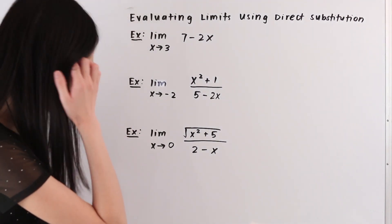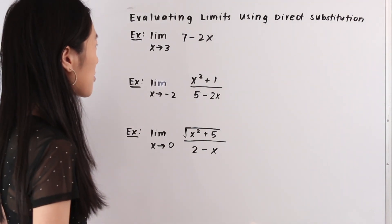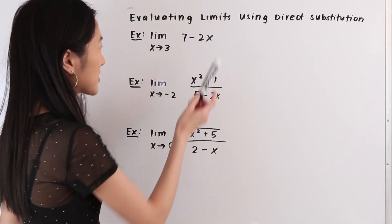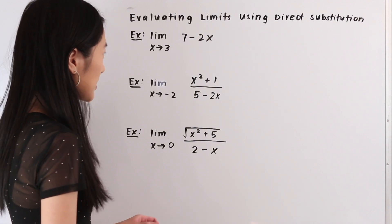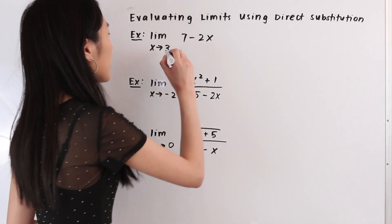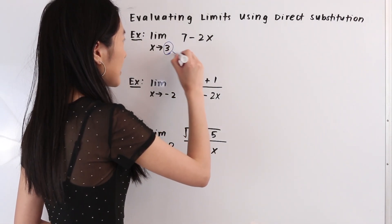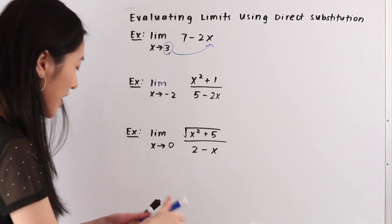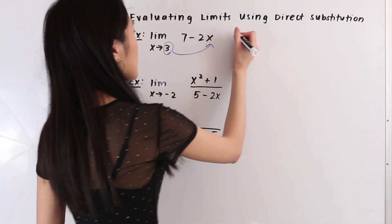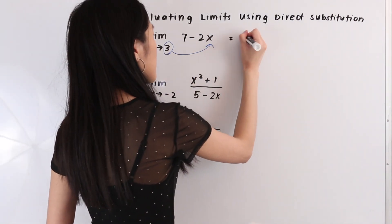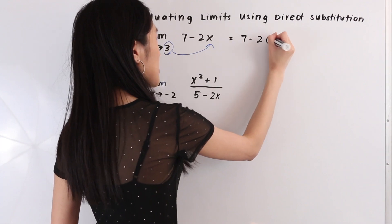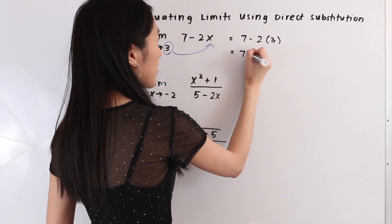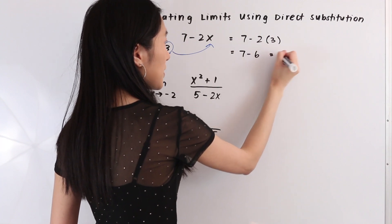In this first example we have the limit as x approaches 3 of the function 7 minus 2x. What we're going to do is take this 3 and plug it in for x in our function. Doing that we have 7 minus 2 times 3, which is equal to 7 minus 6, which is equal to 1.